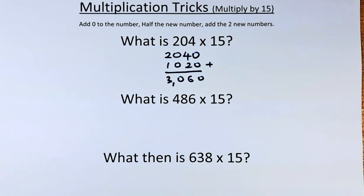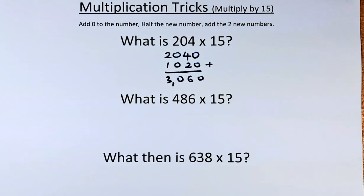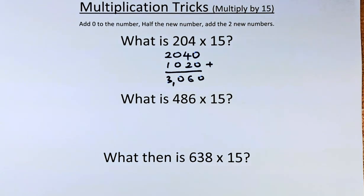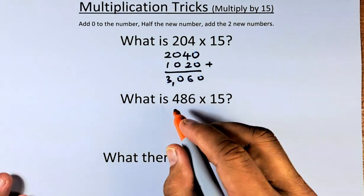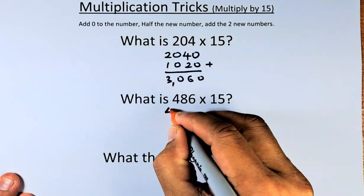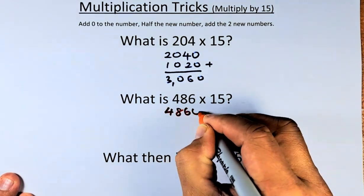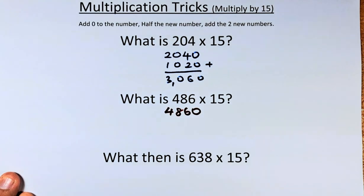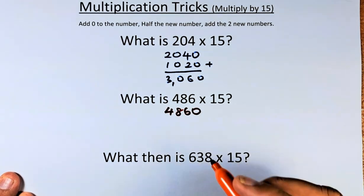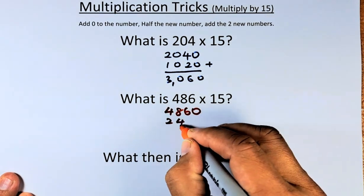Now for the second example: 486 multiplied by 15. Again, we're going to take 486 and add 0, making it 4860. Then we half 4860, which becomes 2430.